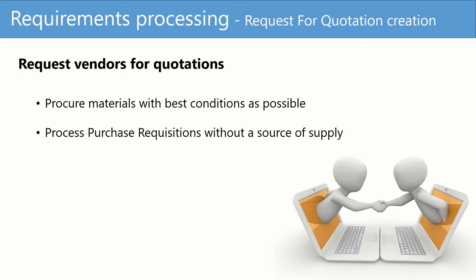What is a request for quotation? It is a request sent to one or more vendors to communicate their conditions for a specific possible order. They are requested to submit quotations indicating prices of materials along with their terms and conditions such as delivery time or payment terms. Once a request for quotation, also called RFQ, has been created, sent to vendors and an answer has been received, it allows the purchasing department to take the best buying decision for the company.